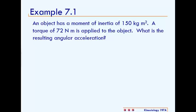This is example 7.1. 7.1 reads, an object has a moment of inertia of 150 kilograms times meters squared. A torque of 72 newton meters is applied to the object. What is the resulting angular acceleration?